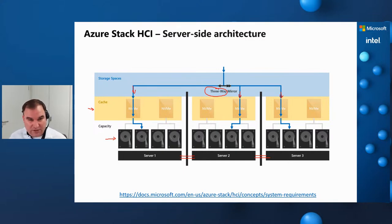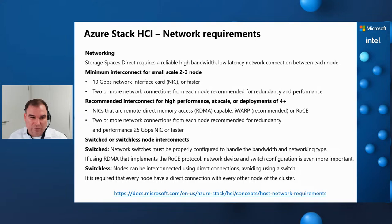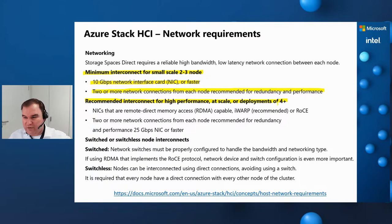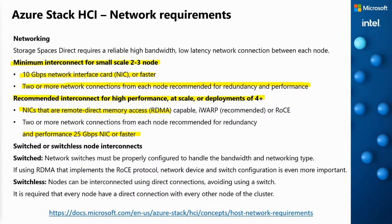What are the network requirements for Azure Stack HCI? According to Microsoft's documentation on learn.microsoft.com, for a small implementation, 10-gigabit network interfaces are fine, and you should always have two or more interfaces for redundancy and performance. For high-performance configurations — four or more nodes, or flash-only configurations — Microsoft recommends 25 gigabits or more port speed, and NICs that have RDMA (Remote Direct Memory Access) enabled.